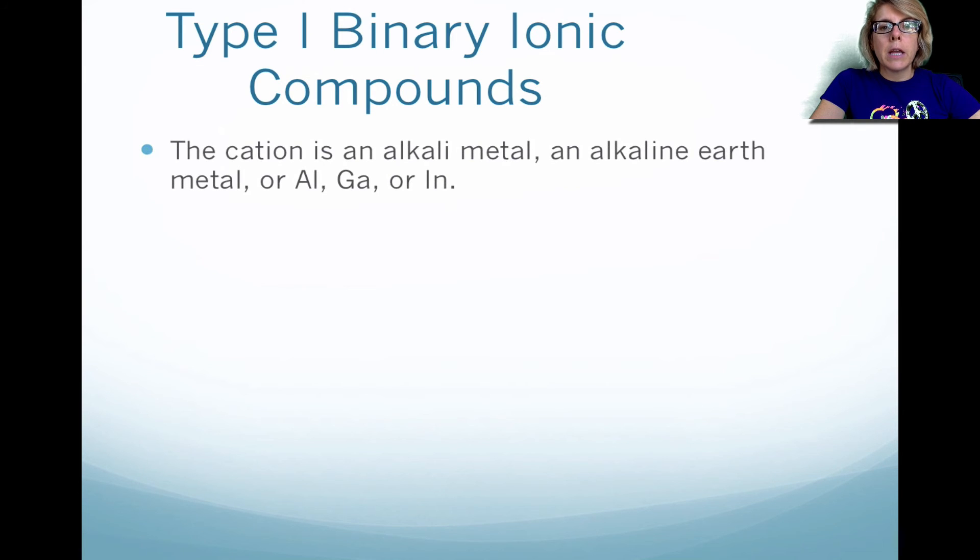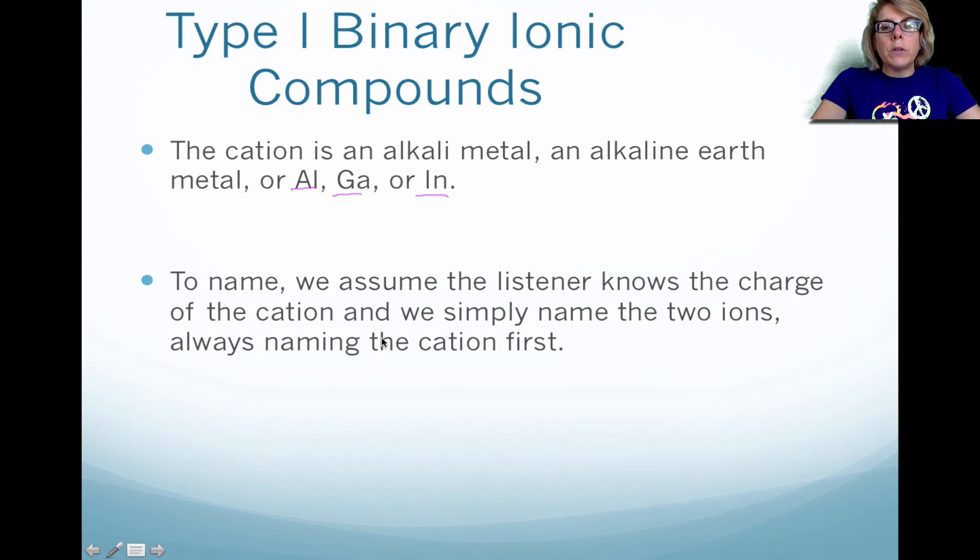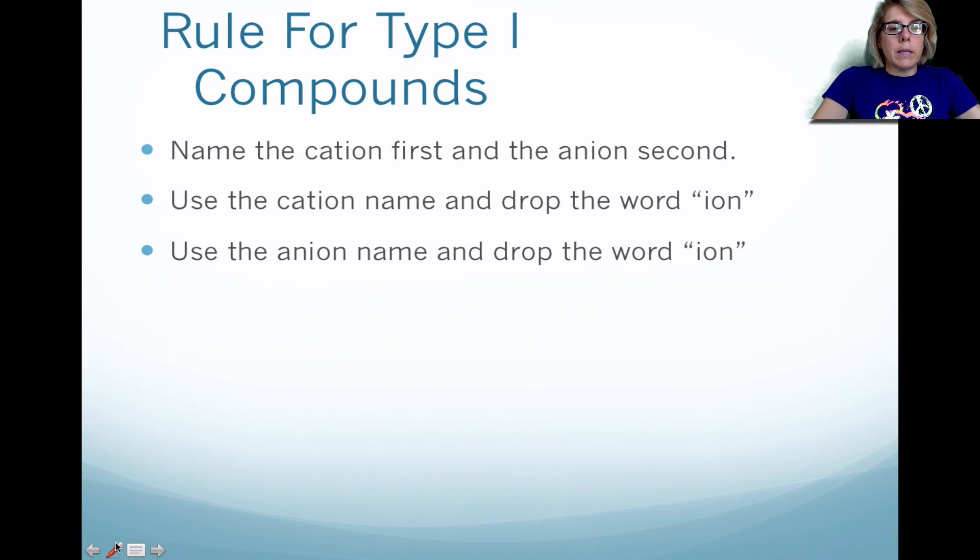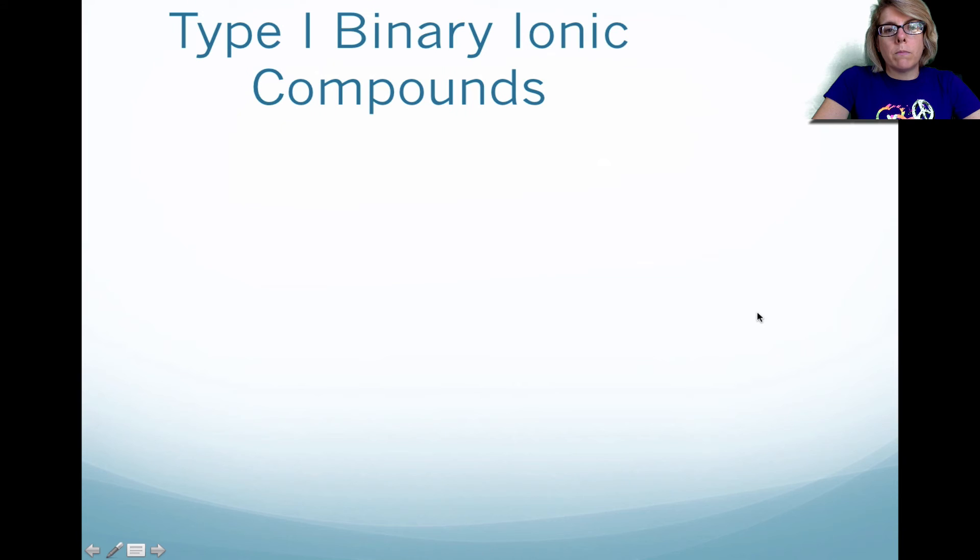Okay, so type 1 binary. Typically, you have a cation, and it could be an alkaline metal or an alkaline earth metal, or it could even be something like aluminum, gallium, indium. Now, what you need to do is you need to name the cation first, and then you're going to always add the anion after that. So like I said, you want to name the cation first, and then after you name the cation, then you can add the anion's name. So for both of them, we showed examples where you were just naming the ion. You're going to get rid of the word ion. It's not part of the overall compound name.